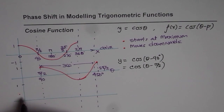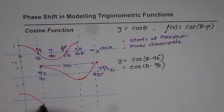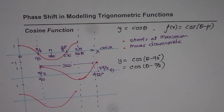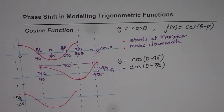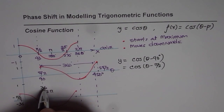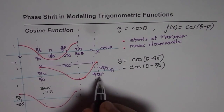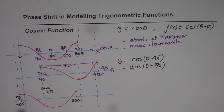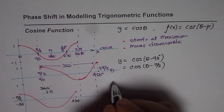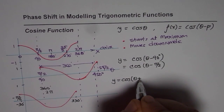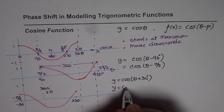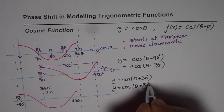Now let's take another example. This time I'll start the wave a bit earlier, before 0 for the cosine wave. Let me take this starting point as minus 30 degrees, which is minus pi by 6. It will end 30 degrees before 360 degrees, since the time period is 2 pi or 360 degrees, so the wave starts at minus 30 and ends at 330 degrees. Since it starts earlier, we write this as y equals cos of theta plus 30 degrees. In radians, it will be y equals cos of theta plus pi by 6 radians.